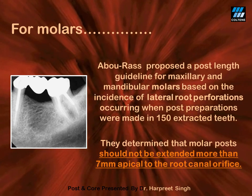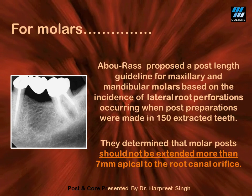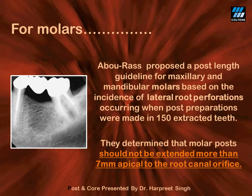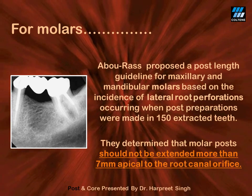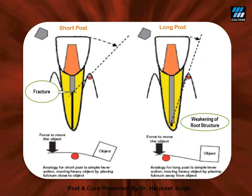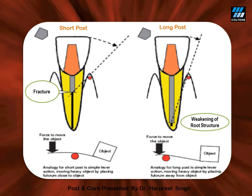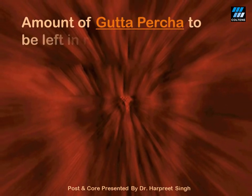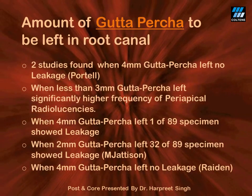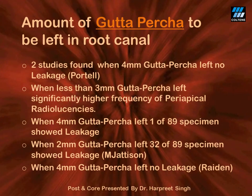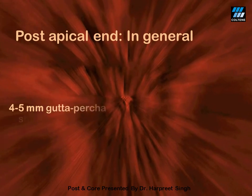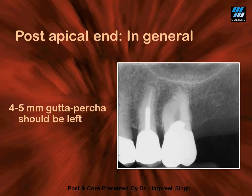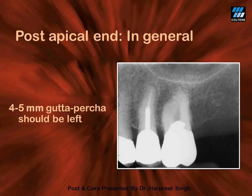The choice of root canal for post placement would be the palatal canal for maxillary premolars and molars, and the distal canal for mandibular molars, since these canals are relatively straight. One can clearly visualize in this slide that a post either too short or too long can be detrimental to root integrity. In general, 4 to 5 mm of gutta-percha should ideally be left behind so that the apical seal of the endodontically treated tooth is not disturbed.